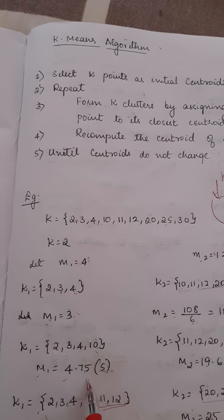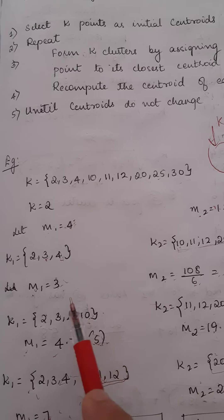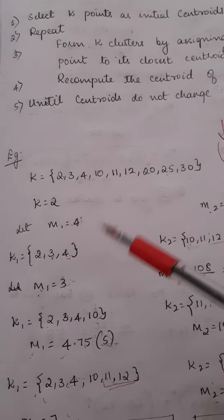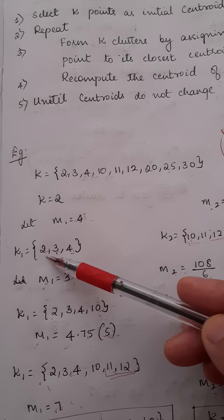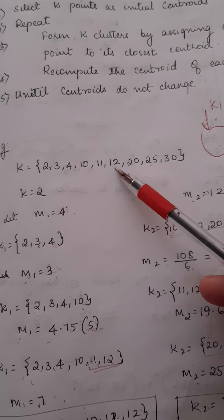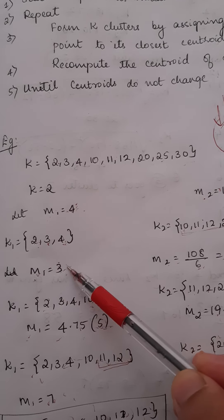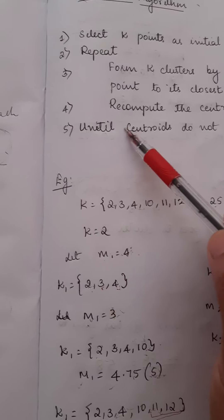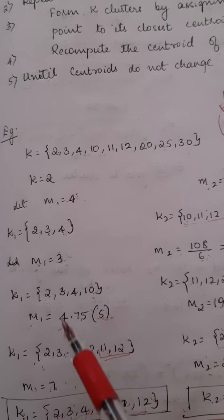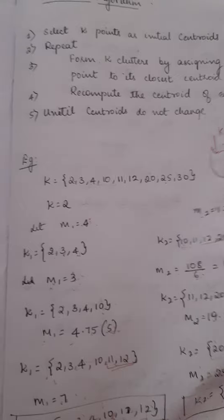To summarize K-means: first, select K points as initial centroids — here we took m1 and m2. Second, form K clusters by assigning each point to the closest centroid — for example, 2 is closer to 4 so it is assigned to K1. Third, recompute the centroid of each cluster — we computed m1 equal to 3 and m2 equal to 18. Fourth, repeat until centroids do not change. This is how the K-means clustering algorithm works.